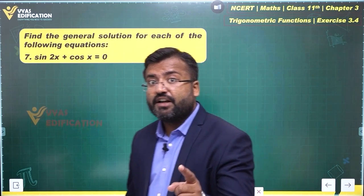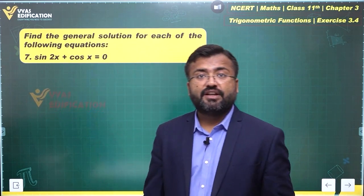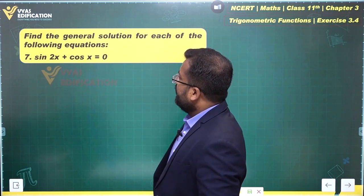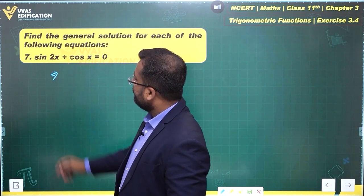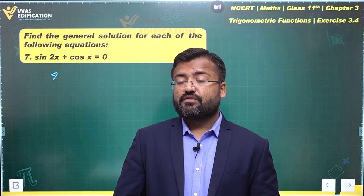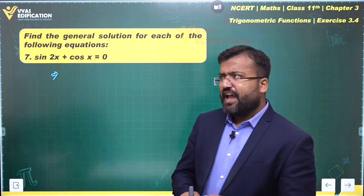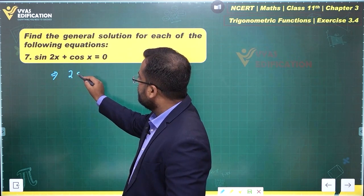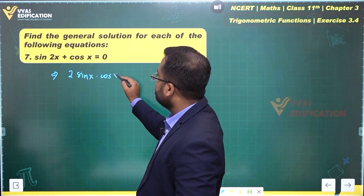Our target, remember, our target is to take something common. What can this simplify into? I see that there is a cos x hidden in sin 2x. How? Sin 2x is actually equal to 2 sin x cos x.